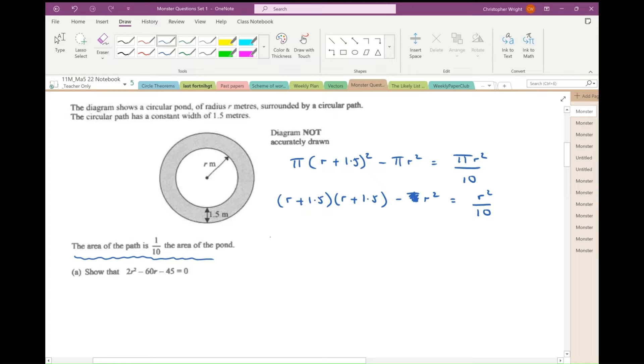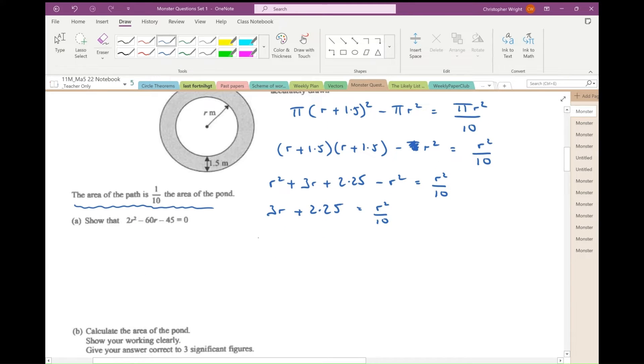Let's expand those two brackets. r squared plus 3r plus 2.25 minus r squared equals r squared over 10. Tidy up the left-hand side: 3r plus 2.25 equals r squared over 10. Multiplying by 10, 30r plus 22.5 equals r squared. Set it equal to 0. r squared minus 30r minus 22.5 equals 0. Multiplying by 2, 2r squared minus 60r minus 45 equals 0. There you go. Show that that equation is true.